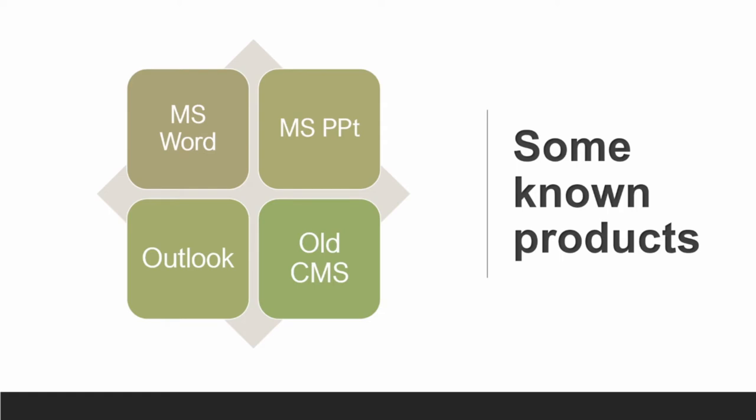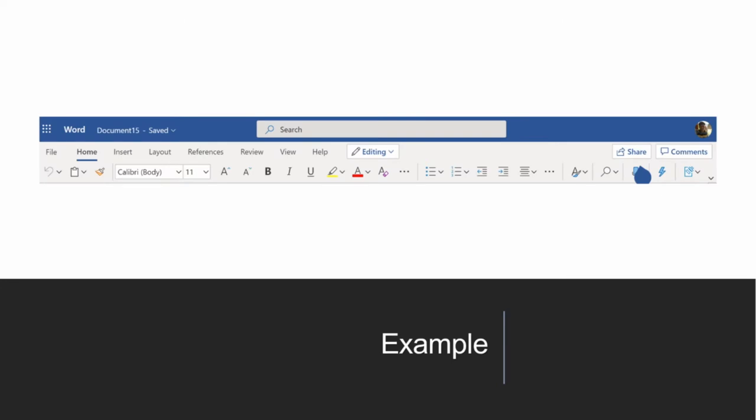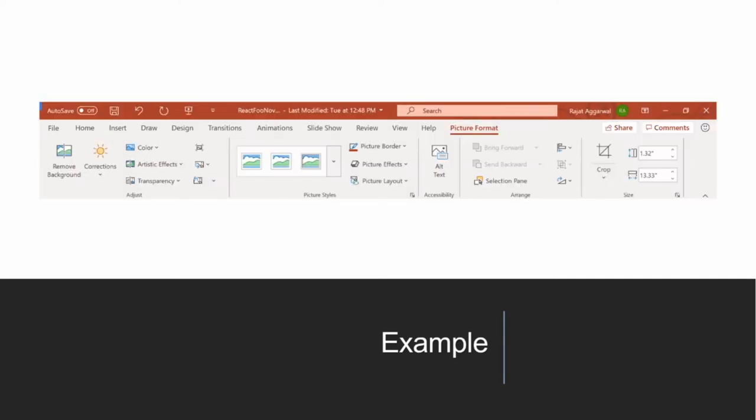Some known products: Microsoft Word, Microsoft PowerPoint, Outlook, and some old CMS systems. I can relate — when I was in college I used to write in MS Word, and React wasn't there yet. A snapshot of the existing project in Microsoft — this is Word Web Online we're talking about, and similarly for PowerPoint.